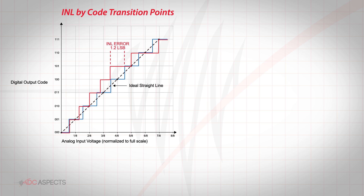INL is the integral of the DNL errors. Thus, the INL error at any given point in an ADC transfer function is the accumulation of all previous DNL errors. INL describes the deviation of the actual ADC transfer function from the ideal straight line. It may be expressed in LSBs or as a percentage of the full scale range.